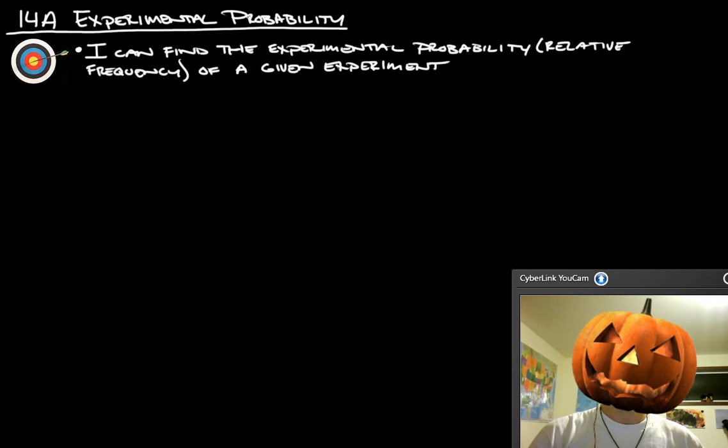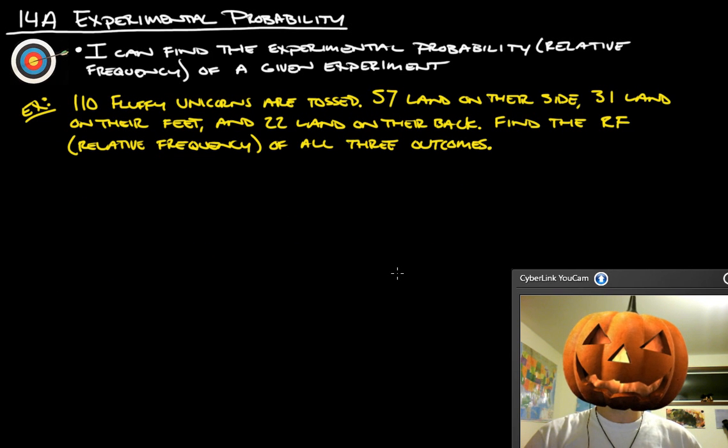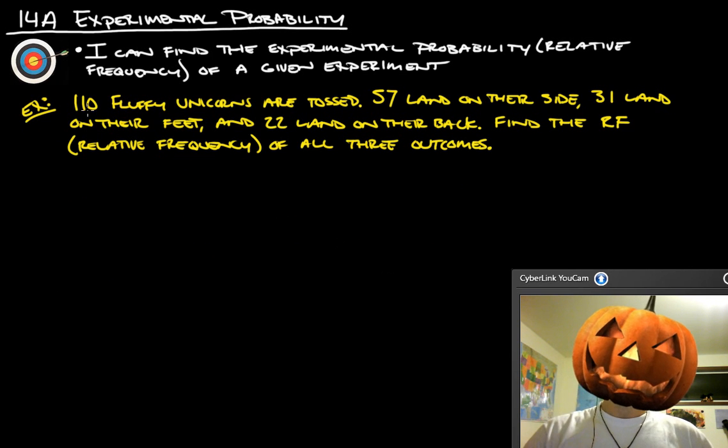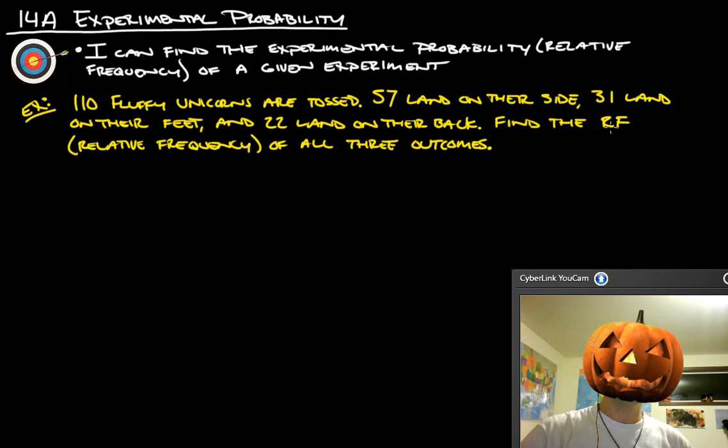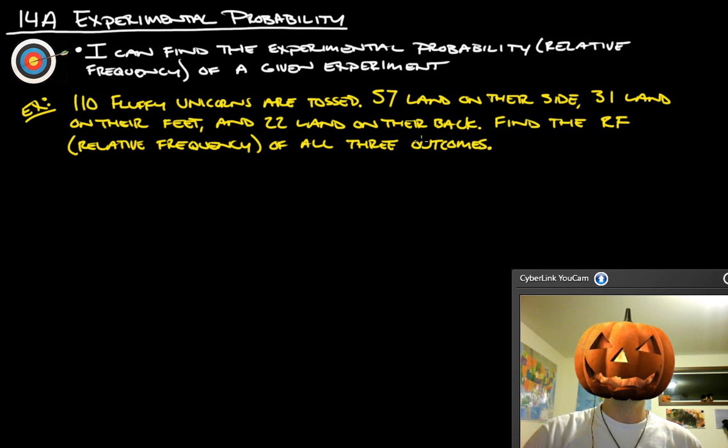Alright, so let's try our own example on that. We have 110 fluffy unicorns are tossed, 57 land on their side, 31 land on their feet, and 22 land on their back. Find the relative frequency of all three outcomes, and the book will often refer to relative frequency as RF.